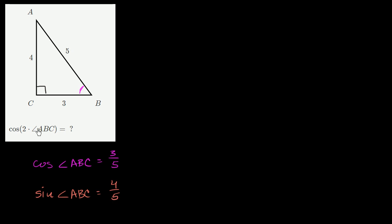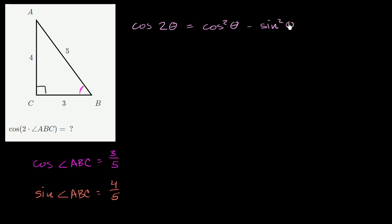So if we could break this down into just cosines and sines of angle ABC, then we'll be able to evaluate it. Lucky for us, we have a trig identity that does exactly that: the cosine of 2 times an angle is equal to cosine of that angle squared minus sine of that angle squared. We've proved this in other videos, but it becomes very helpful here.